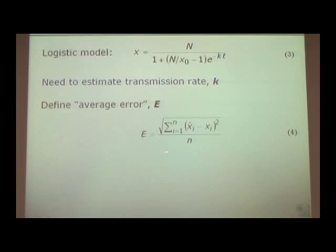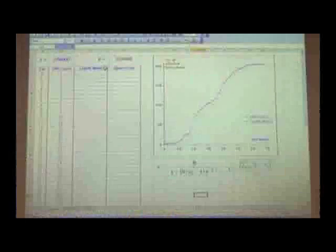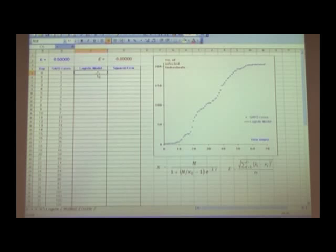we define some kind of average error. And in this particular case, I define the average error to be something like this, a square root of the sum of the squares of the difference between the model value and the data value, and then the whole thing divided by the number of data points. Just now I showed you how we can use the solver feature in Microsoft Excel, for example, to estimate the unknown parameters. Now we're going to do that again.